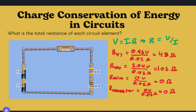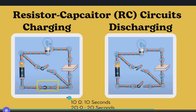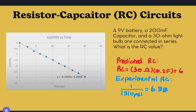For RC circuits — resistor-capacitor circuits — one is charging and one is discharging. Timing how long it takes to charge the capacitor: 10 ohms takes about 10 seconds, and 20 ohms takes about 20 seconds. The same applies to discharging. If you plot the natural log of V versus time, you get a linear graph. With a 9-volt battery and bulbs connected in series, the predicted RC value is 6. Experimentally, taking 1 over the slope (the inverse natural log) gives 6.68, which is very similar.